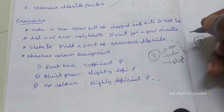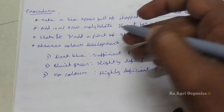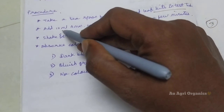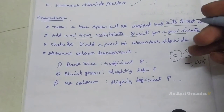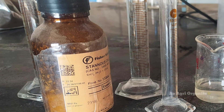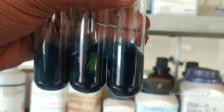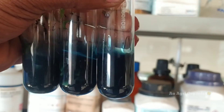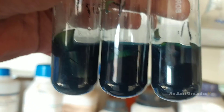We have to chop the leaf and take it in a test tube — a small test tube is enough, or we can use a falcon tube. Then we have to add 10ml of ammonium molybdate solution and wait for a few minutes. After shaking, we have to add a pinch of stannous chloride — just a pinch is enough, no need to add more. After waiting for 1 to 2 minutes, we can observe the color development.